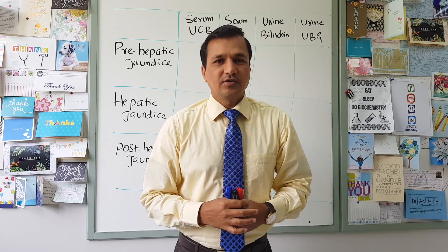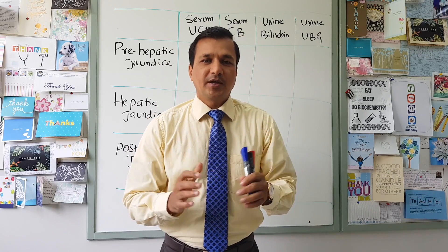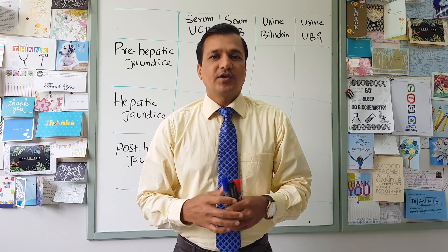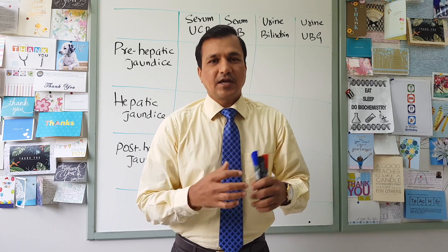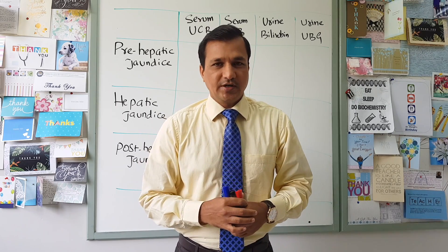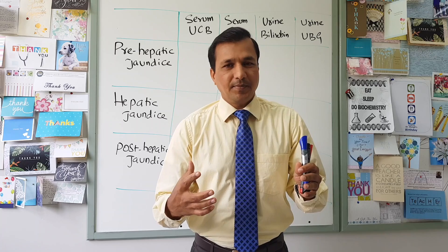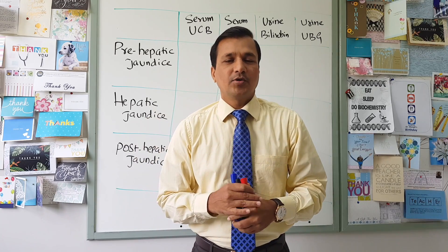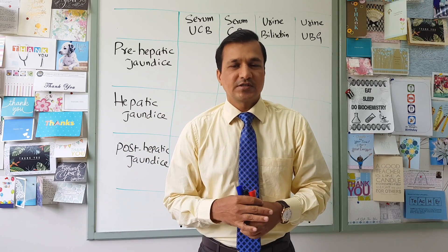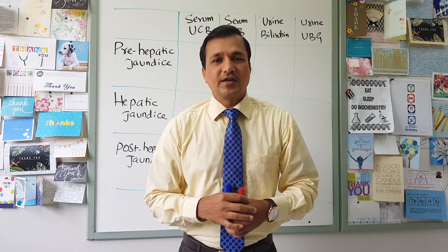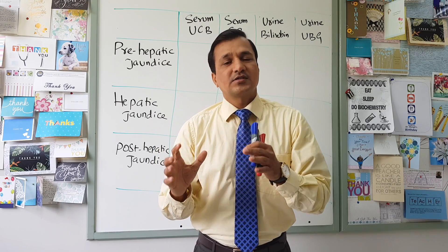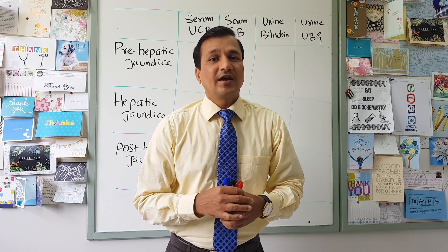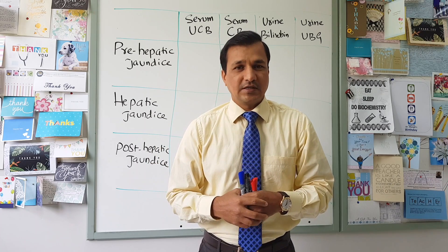In this video I will be explaining the different laboratory changes that we are going to see in three types of jaundice: pre-hepatic jaundice, hepatic jaundice, and post-hepatic jaundice — and what the laboratory findings are, specially in the serum and in the urine, in connection with the kind of bilirubin that we are going to see there.